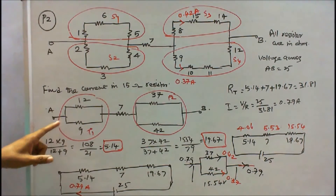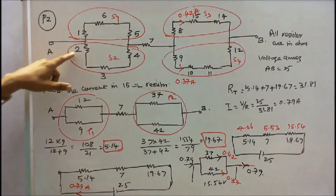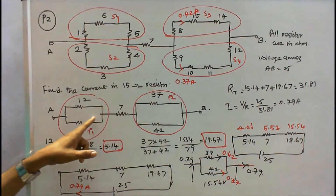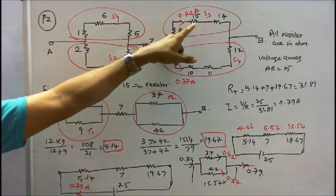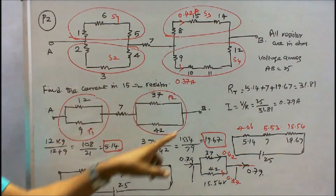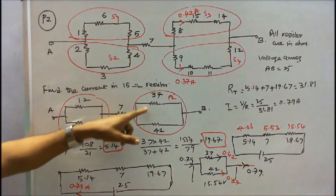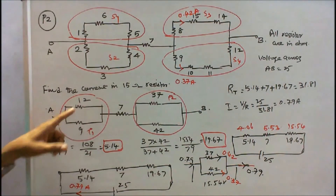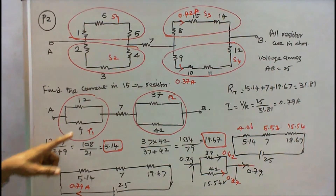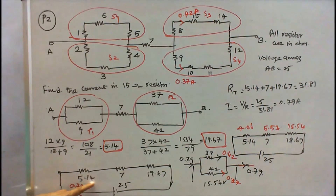Redrawing: 1+6+5 = 12, and 2+3+4 = 9. The 7Ω resistor is connected in series with this group. Also, 8+15+14 = 37, and 9+10+11+12 = 42. The 12Ω and 9Ω are in parallel: 12×9 / (12+9) = 5.14Ω. The 37Ω and 42Ω are in parallel.